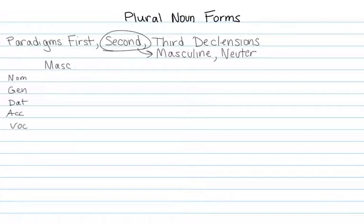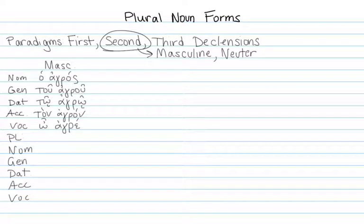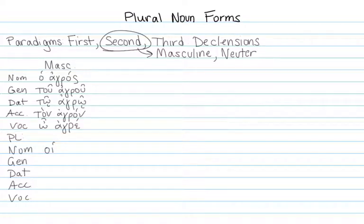To review the masculine, we have our five cases, same five cases in the plural. We learned the singular forms in Chapter 2: ho agros, tu agru, to agro, ton agron, and o agre. Now we're going to learn the plural forms. We've already seen some of these in the readings.